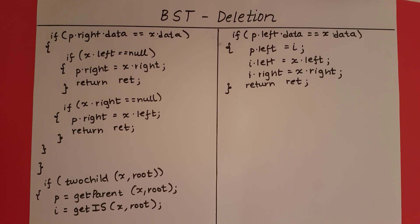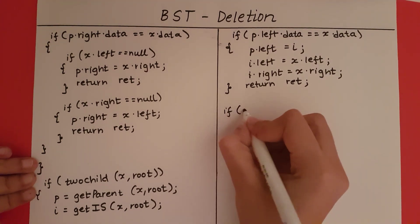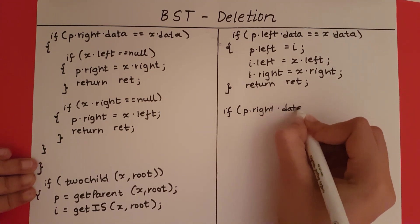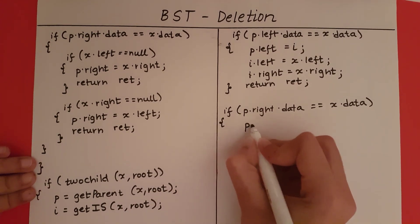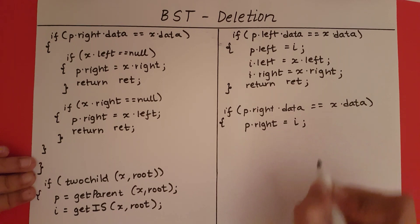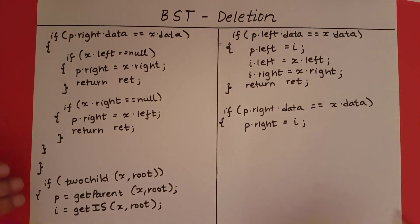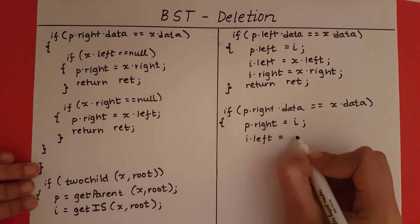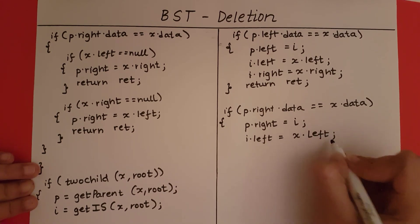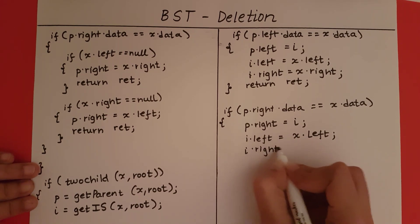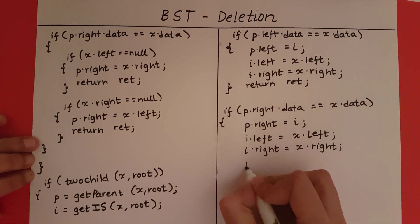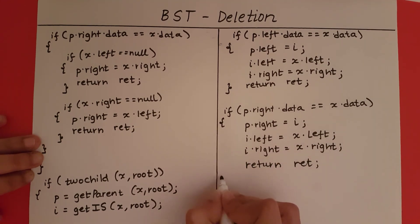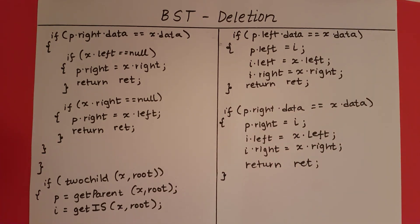Now the case if x is the right subchild of p: if p.right.data equals x.data, we set p.right to i. Then the steps repeat — we give the left subchild of x to the left subchild of i, and the right subchild of x to the right subchild of i. With this we finish replacing x with i, and we finish the check for x being a node with two children. That concludes the delete function.